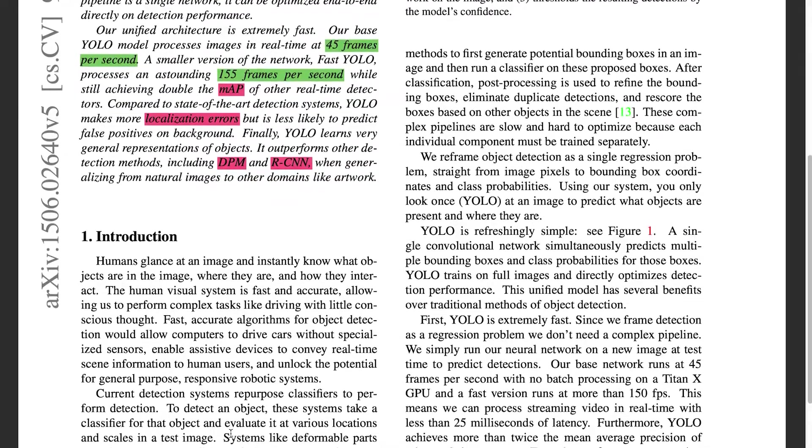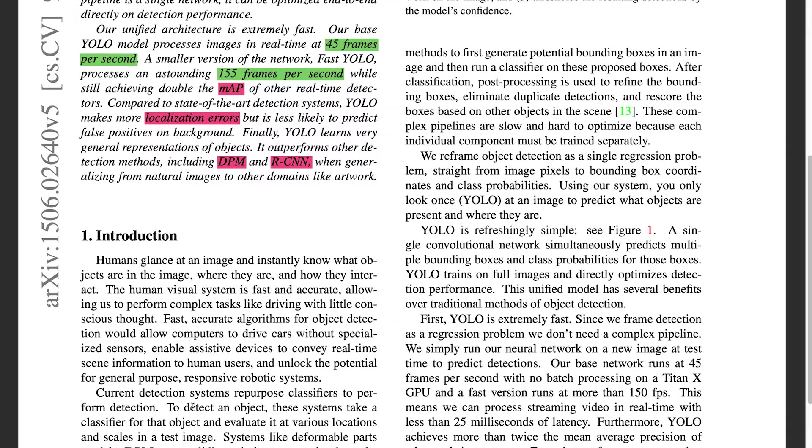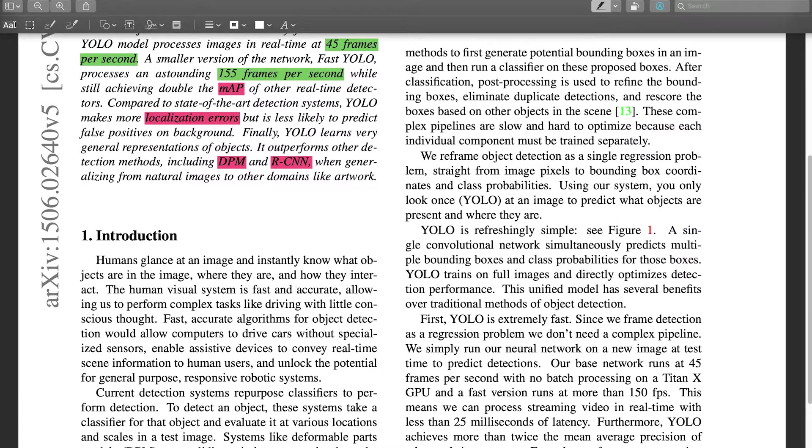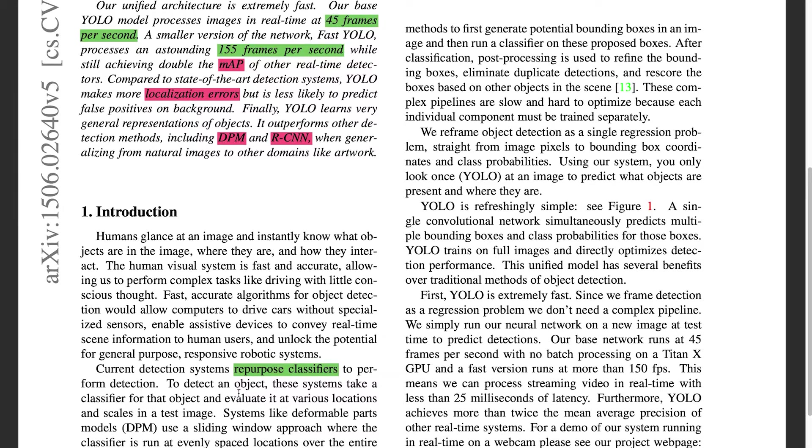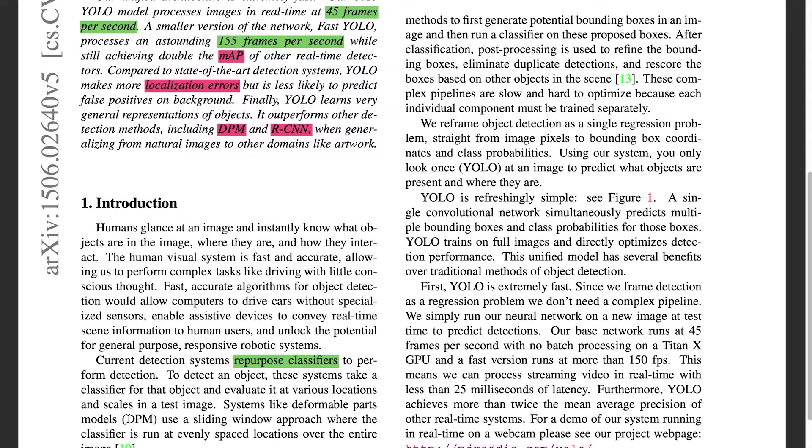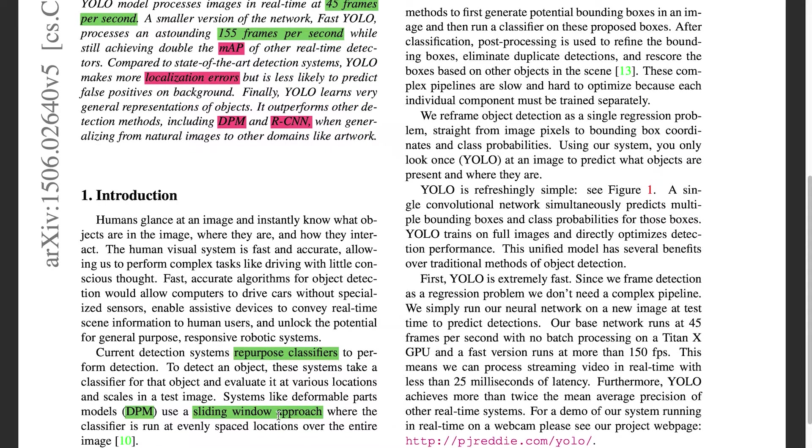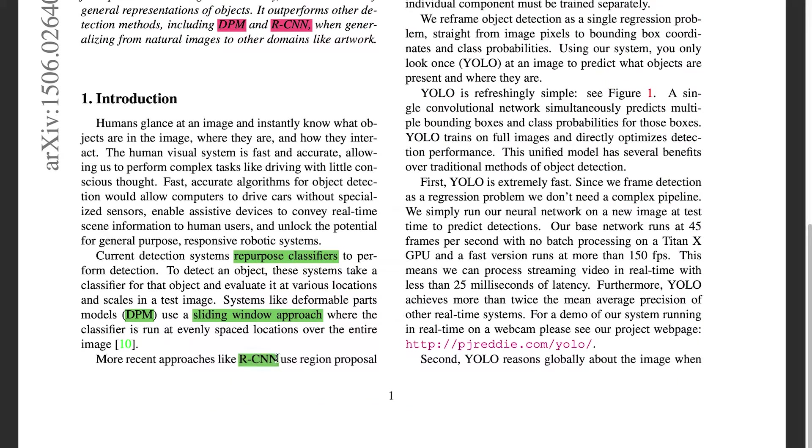Current detection systems repurpose classifiers to perform detection. To detect an object, these systems take a classifier for that object and evaluate at various locations. Okay, so that was quite a lot. So I've already understood what repurposed classifiers are from googling the abstract, and now I also have an understanding of what DPM is, that is also from the abstract, using a sliding window approach, which you would have learned when you looked up DPM. So now RCNN, also I have a vague understanding of.